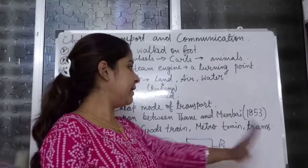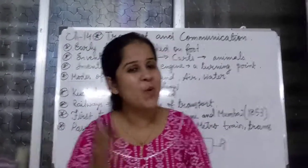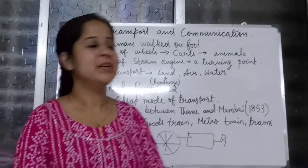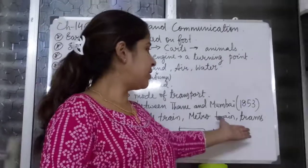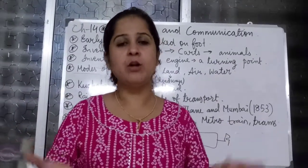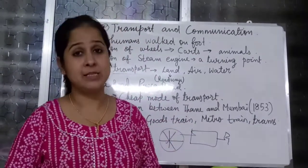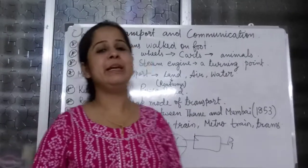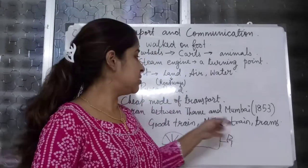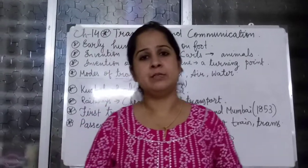Next is the tram. Tram is mainly found in Kolkata — the city of joy. Trams are not found everywhere in India; in some parts they exist, but mainly they are found in Kolkata and still running. This is all about the railways.